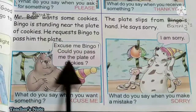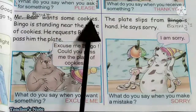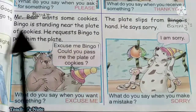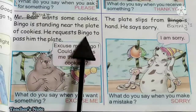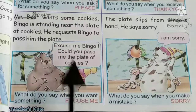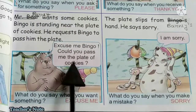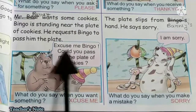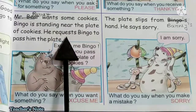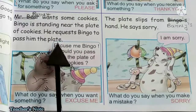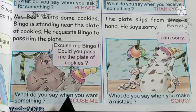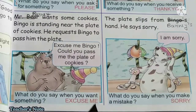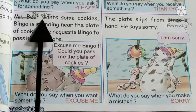Now look at the next picture. Bernie wants some cookies and he sees Bingo standing near the plate of cookies. So he requests Bingo to pass him the plate. How does he say it? 'Excuse me, Bingo, could you pass me the plate of cookies?' When we ask anyone to pass something, we say 'excuse me.' So when you want something, what do you say? Excuse me.